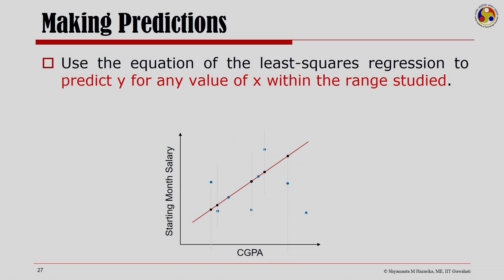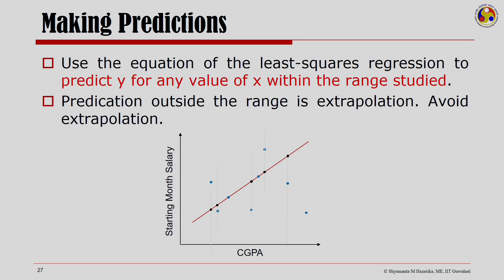Once data is prepared and the least squares regression equation is derived, we can use it to predict y for any value of x — but this must be well within the range studied. Predictions outside that range constitute extrapolation, which we need to avoid. So we use the regression equation to predict only within the observed range, removing outliers from consideration and restricting predictions to the valid range between them.